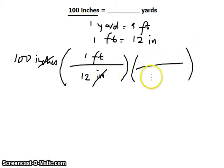Next, we multiply by the conversion factor from feet to yards: 1 yard equals 3 feet. We can cancel the feet unit, and what's left is the unit in yards.